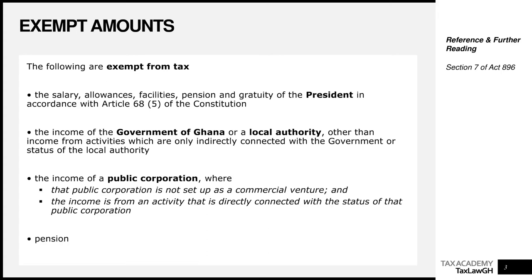We are building a strong foundation for understanding income taxes. You'll find almost all of these exempt amounts in Section 7 of Act 896, the Income Tax Act. Let's look at a number of these to determine which amounts are exempt. The first one is the salary, allowances, facilities, pension and gratuity of the President in accordance with Article 68(5) of the 1992 Constitution.